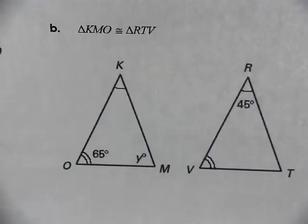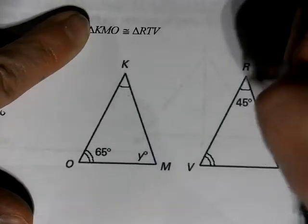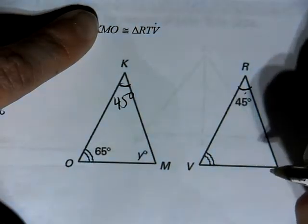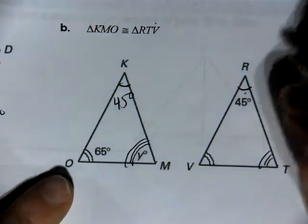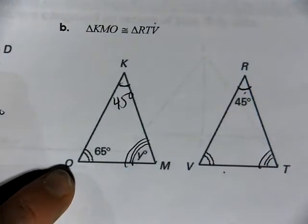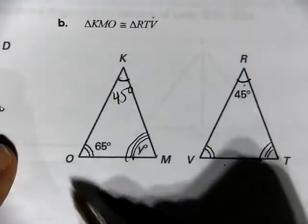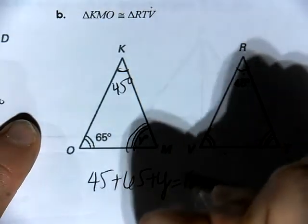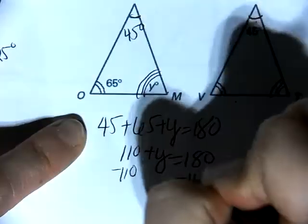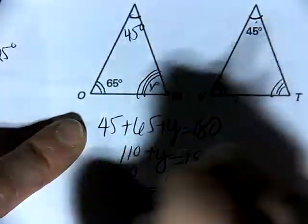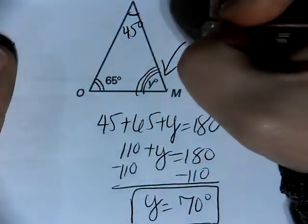For letter B, triangle KMO is congruent to triangle RTV. K matches with R — 45 degrees. M matches with T, O matches with V. To find y: all angles of a triangle add up to 180 degrees, so 45 + 65 + y = 180. That gives 110 + y = 180, so y = 70 degrees.